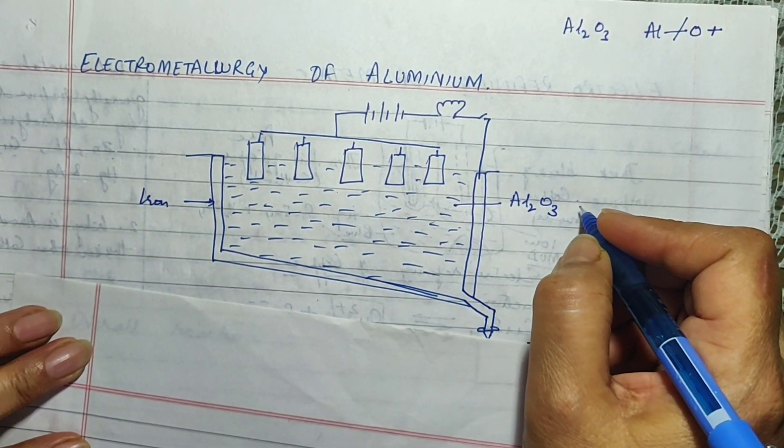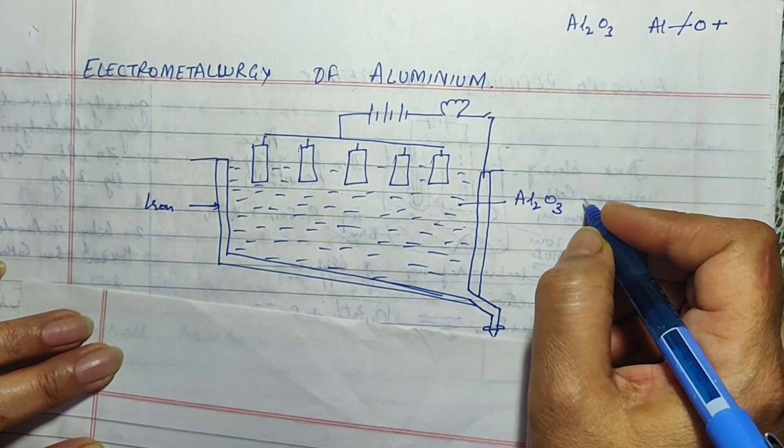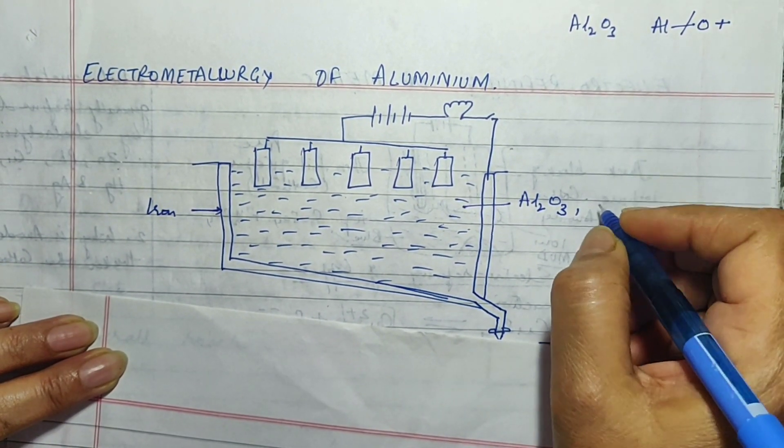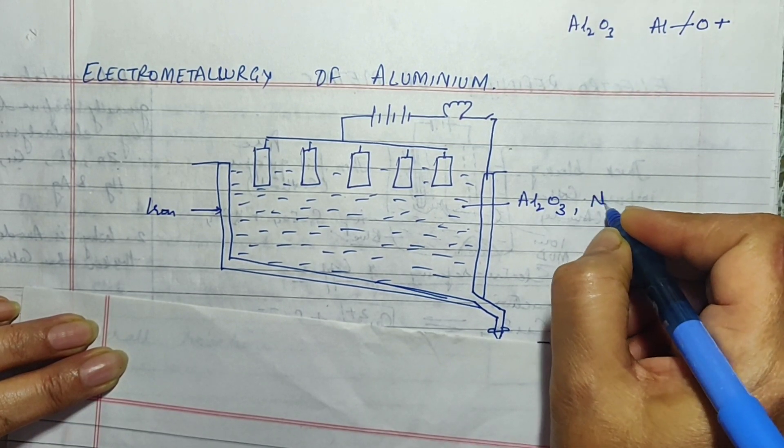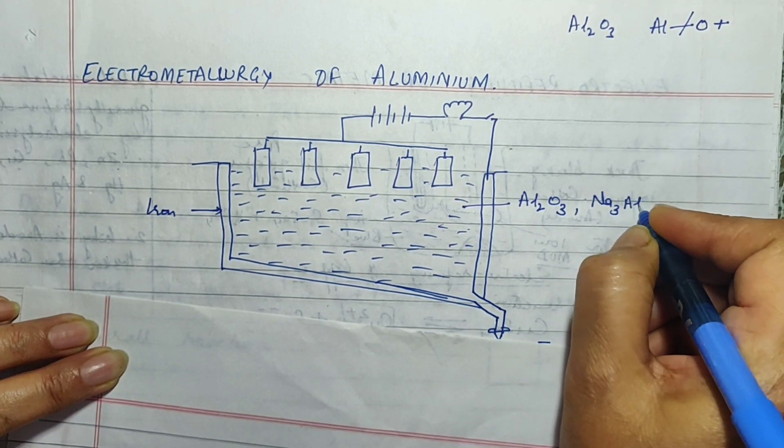Now this Al2O3 is not a very good conductor, it is a non-electrolyte kind of a thing. So to increase the conductivity we add a little bit of cryolite to it. Cryolite is another ore of aluminium, Na3AlF6.